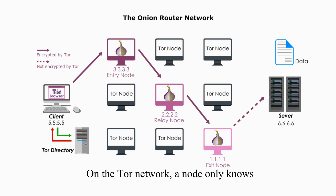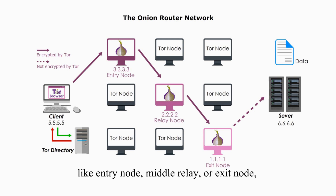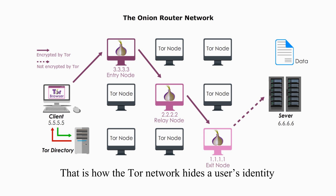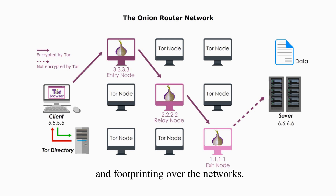On the Tor network, a node only knows the next stop, but no node knows its role — like entry node, middle relay, or exit node. And no single node knows the whole traffic path. The onion layers hide the path from start to end, and this is how the Tor network hides the user's identity and footprinting over the networks.